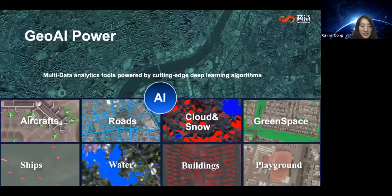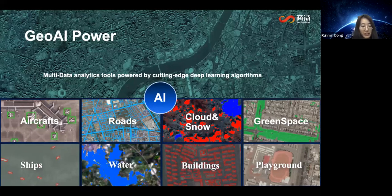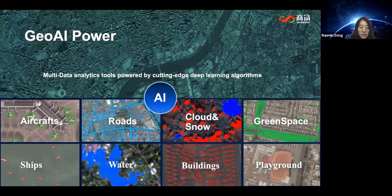After several years dedicated in the remote sensing vertical, we have developed more than 20 kinds of algorithms to deal with different objects in satellite imagery. We detect aircrafts, roads, buildings, ships, and different types of land use such as water, green space, and so on. Combined with some branches of those algorithms, we can make impacts in different scenarios. I would like to show you some specific cases.